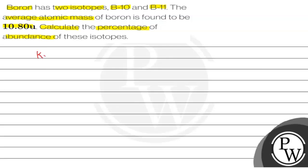So here we have to calculate isotopic abundance with the help of average atomic mass. The key concept is isotopic abundance.